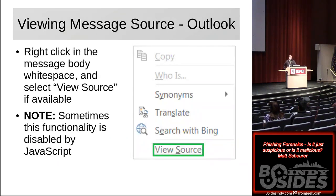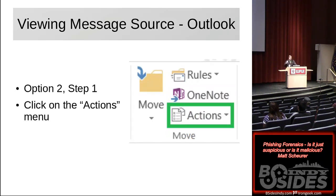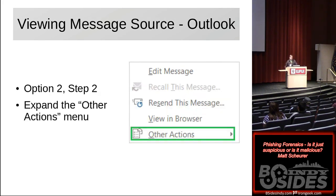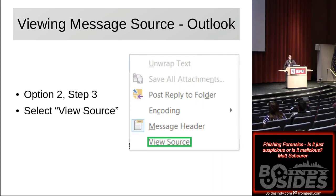The other part — headers being the first part — is the message body, which is the source of the message. A lot of times you can right-click in the body of the message anywhere there's white space and select view source. But sometimes enterprising marketers will disable that using JavaScript or something along those lines. Fortunately you can always get to it by going to the actions menu and selecting the option to view source, and then you'll actually be able to see the text of the message.